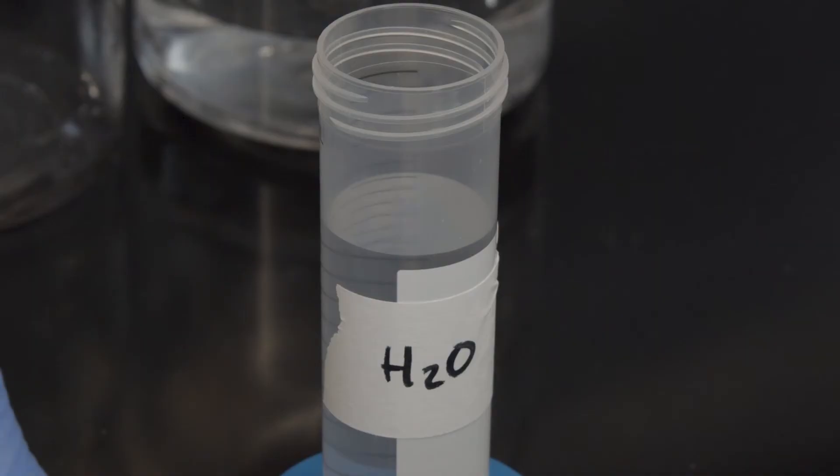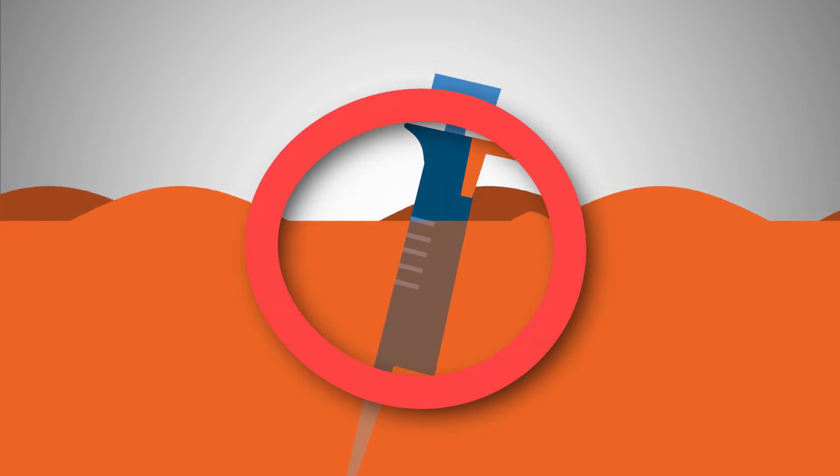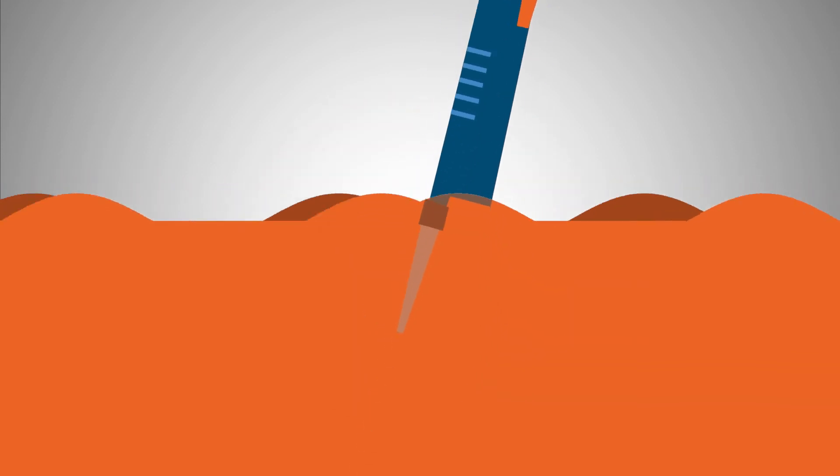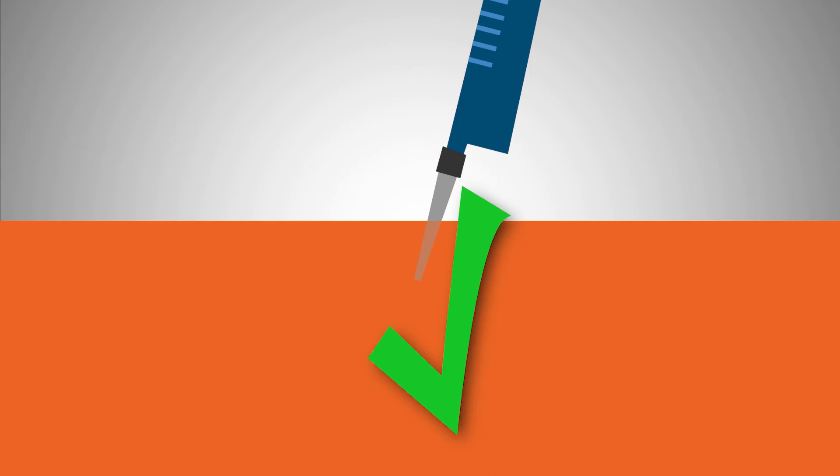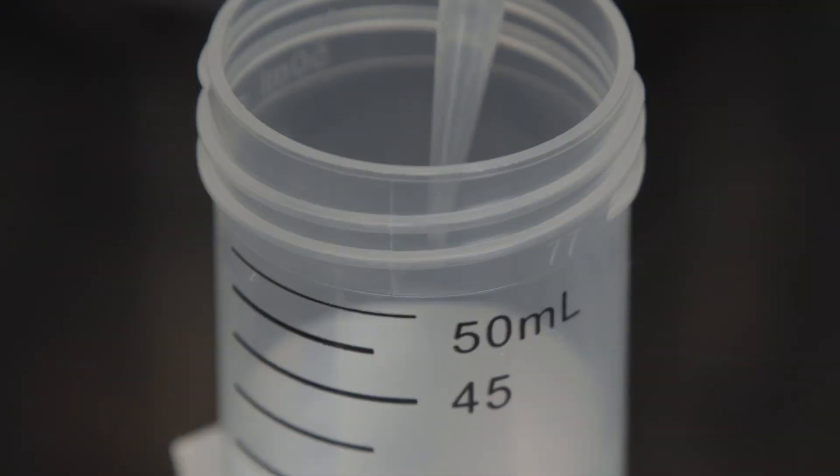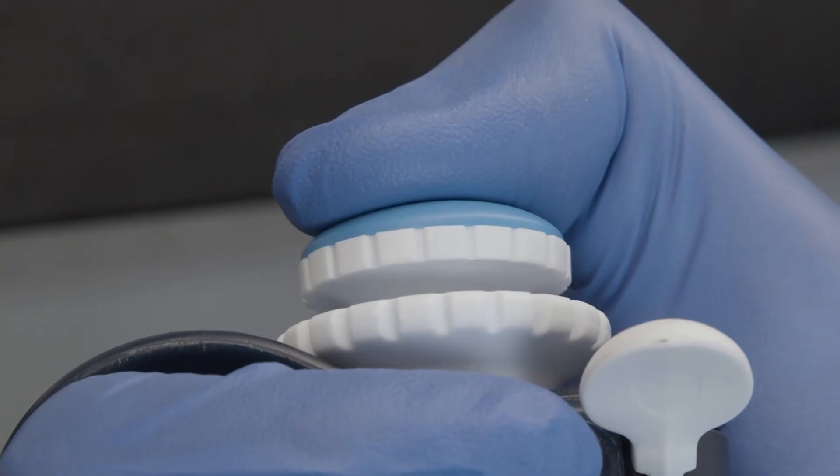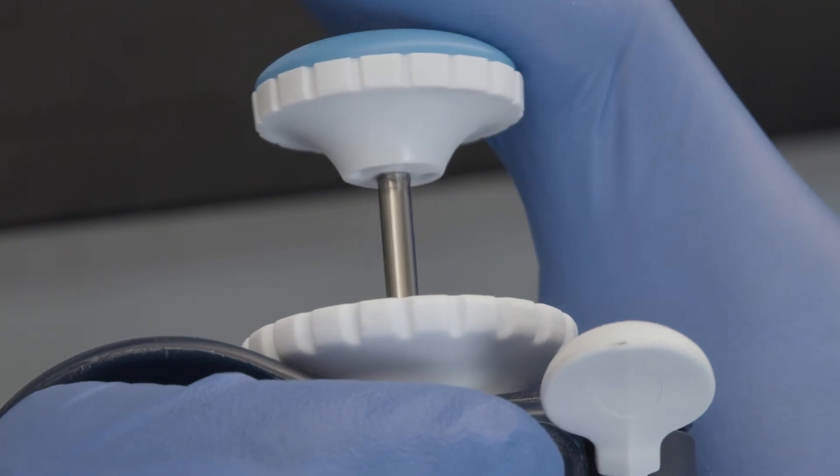Keep the plunger held down and gently lower the tip into the liquid. Do not submerge the entire pipette. Only the tip should ever be submerged into the liquid. Once the tip is submerged, slowly release the plunger, allowing it to go back to its resting position.